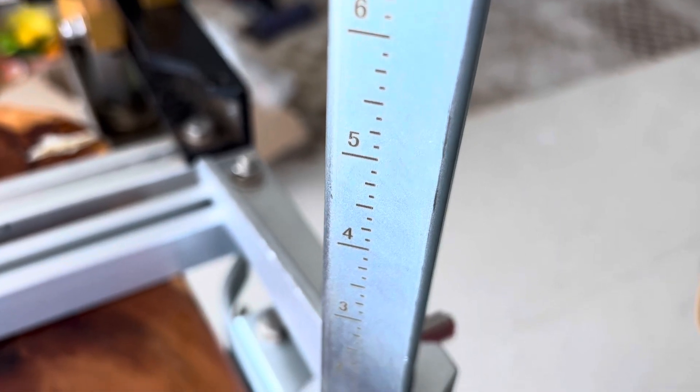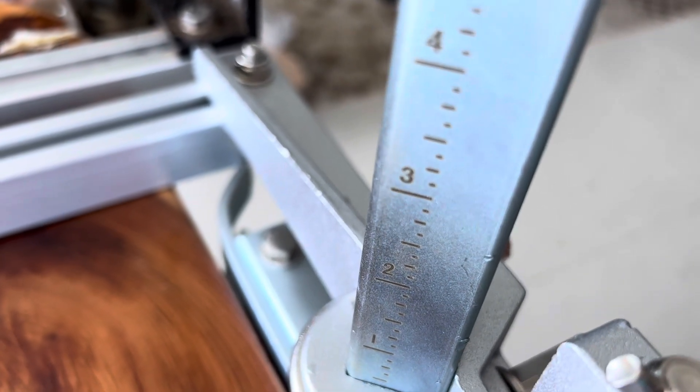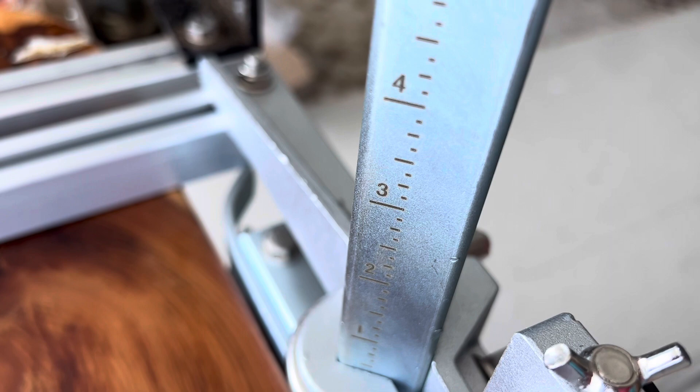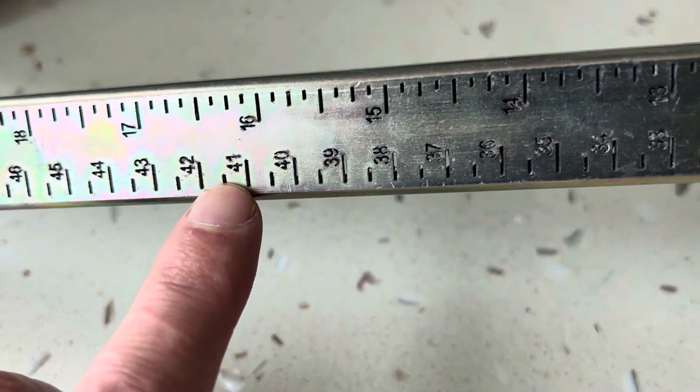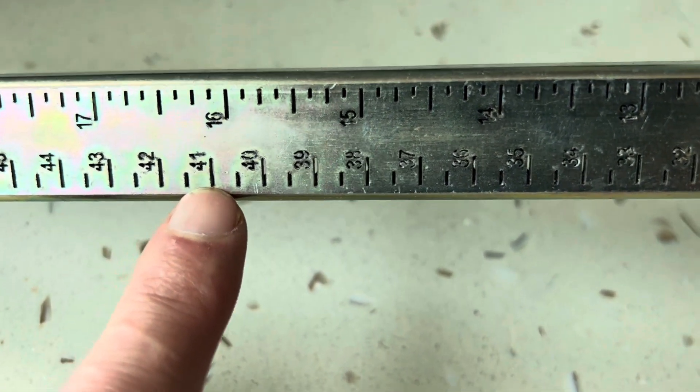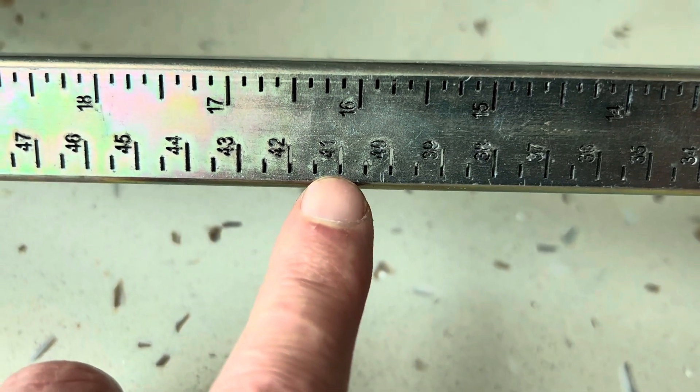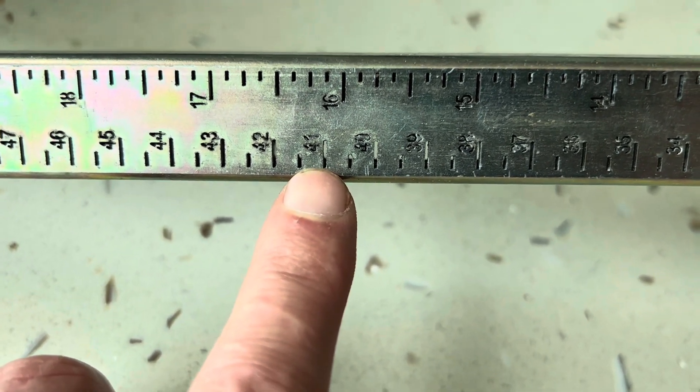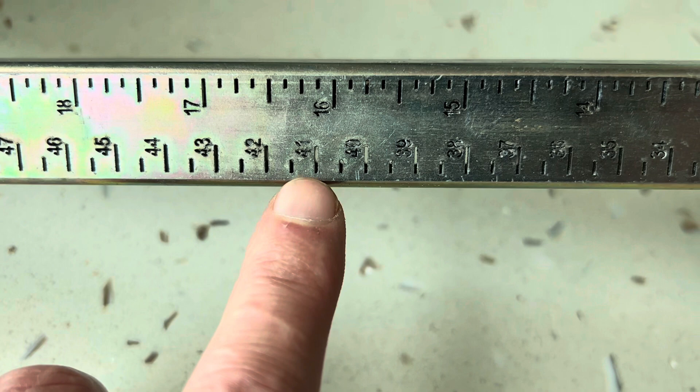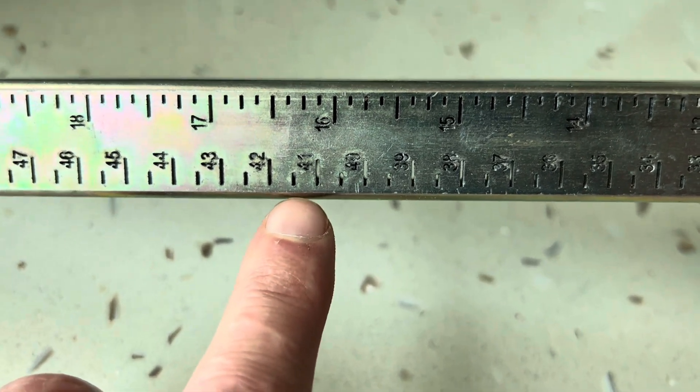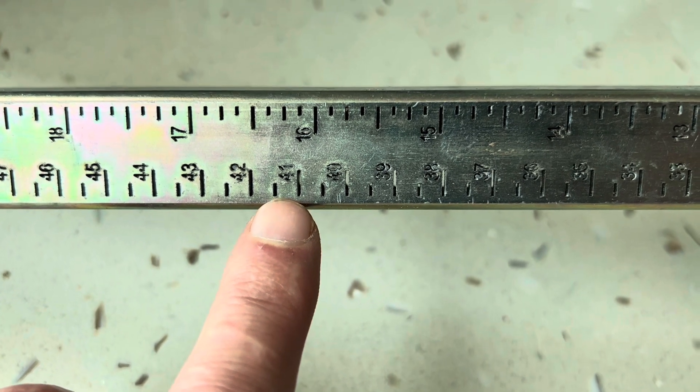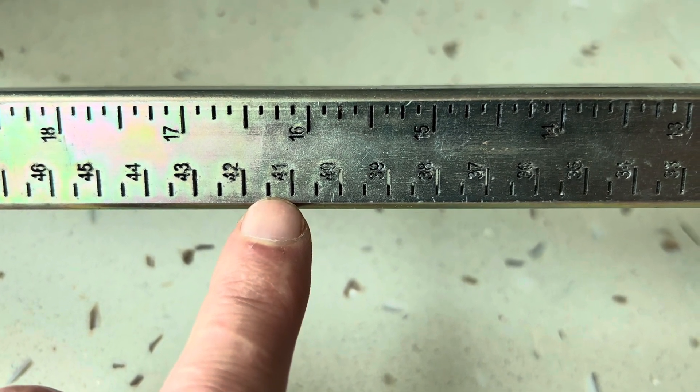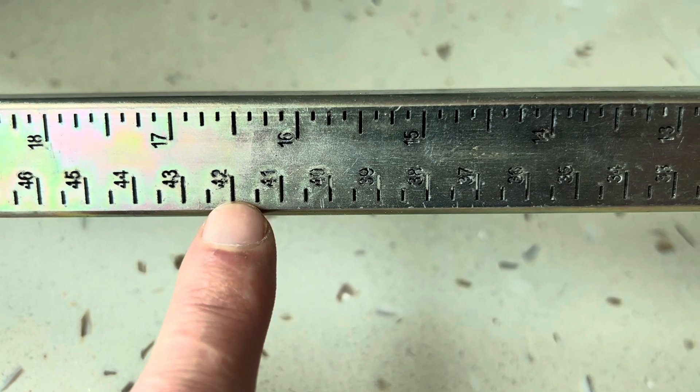When you look at the height fittings on the Chinese mill they're fairly lightly engraved into the upright post and only in inches. On the Panther mill we've got them in centimeters and inches, but these are actually cut through the metal. They'll never wear out and it doesn't matter which way the light direction is, you can always see what height you're at very quickly and easily.